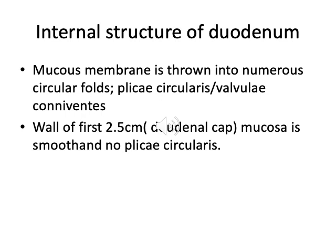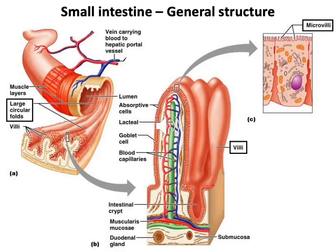Looking at the internal structure of the duodenum, the mucous membrane is thrown into numerous circular folds. These circular folds are called plicae circulares, or valvulae conniventes. However, the wall of the first 2.5 cm — that is, the duodenal cap — has smooth mucosa with no plicae circulares. In this picture you can see the large circular folds in the lumen called plicae circulares.